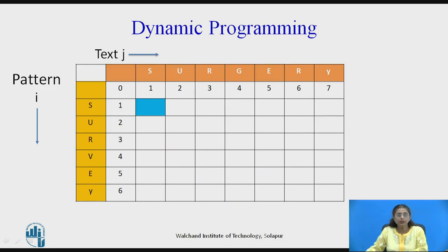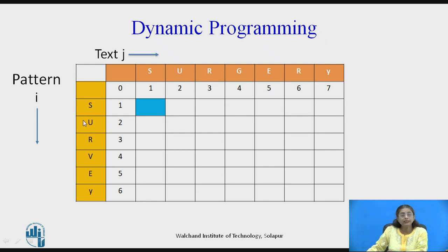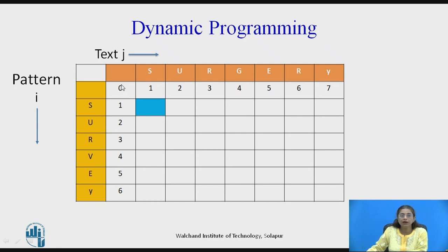Let us see an example. The text is 'surgery' and our pattern is 'survey'. Let us see whether 'survey' will be accepted in the text 'surgery'. The 0th row has entries 0 to 7 (j index), and the 0th column has entries 0 to 6 (i index). The column goes up to 6 because the pattern has 6 characters — if no character is matched, the distance would be 6, 5, 4, 3, 2, 1, and so on.